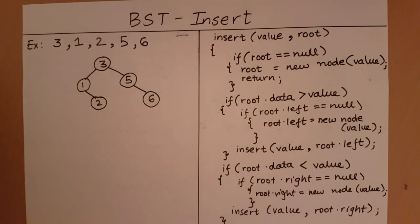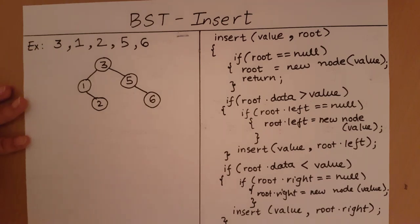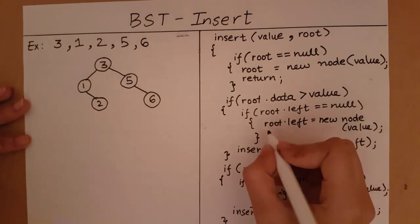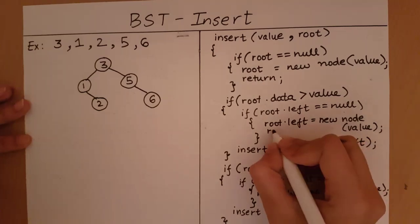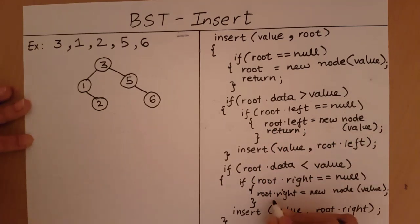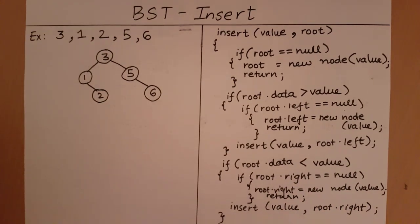It is important to note that when there is space and you can insert, you don't want to continue the program further because you have already inserted your element. Whenever you find space, insert the element and return. Only if you don't find space do you want to execute the recursive insert operation. In this way we can write the algorithm to insert elements into a binary search tree.